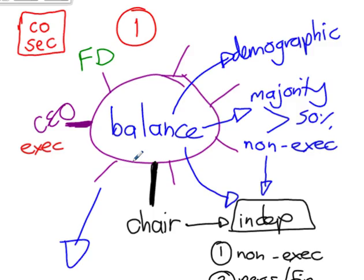For committees in King 3, they said at least two times a year; King 4 again says as many times as necessary to fulfill your duties. Be careful about saying they need to meet four times a year — that's not in King 4, that's King 3. You can use those numbers as a base, but be clear that they're from King 3. King 4 is a lot more principle- and judgment-based.